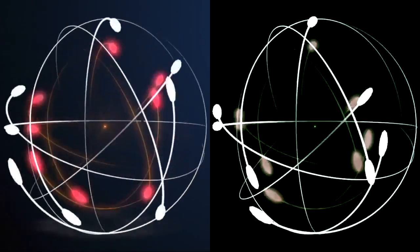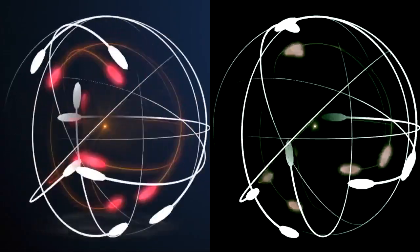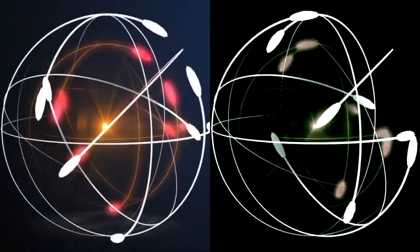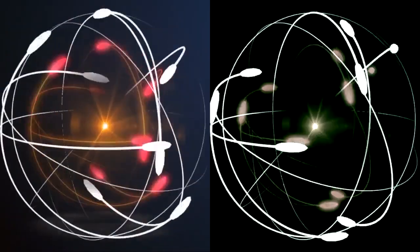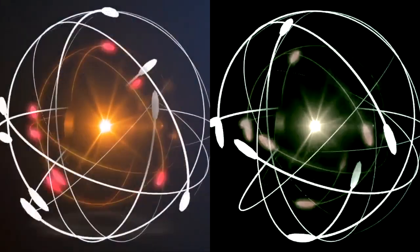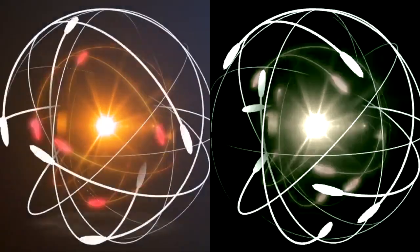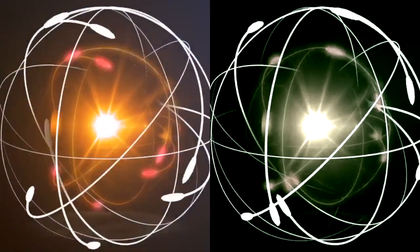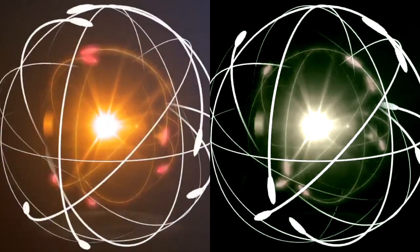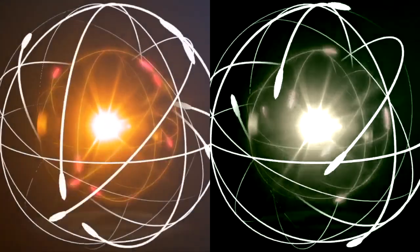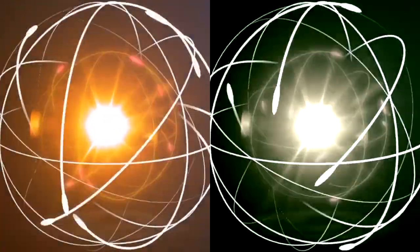However, this equation provided two solutions: one for a particle, and one for a mirror image of that particle with an opposite charge — something we now call an anti-particle.